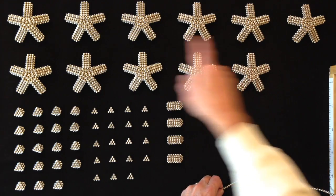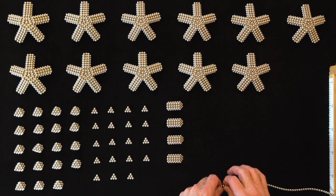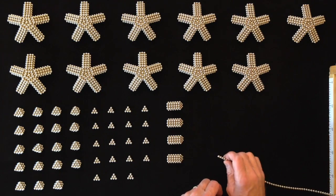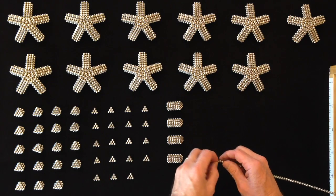To do it we need 12 starfish shapes, so the first thing I'll do is, having built 11 of those 12, I'll build the 12th.